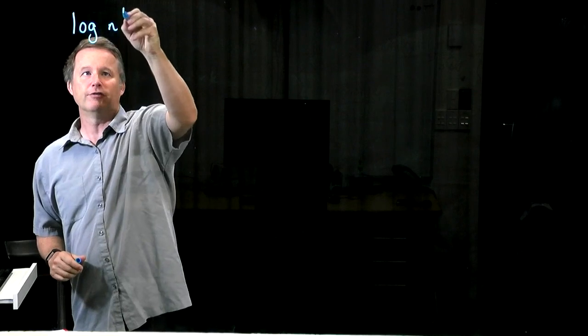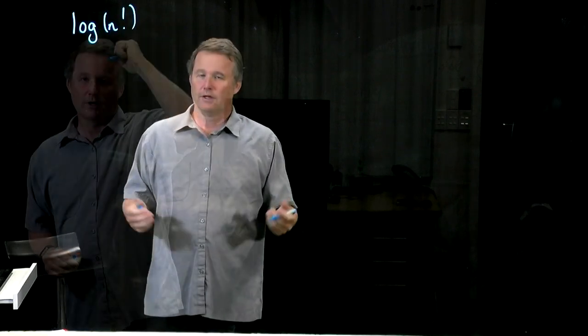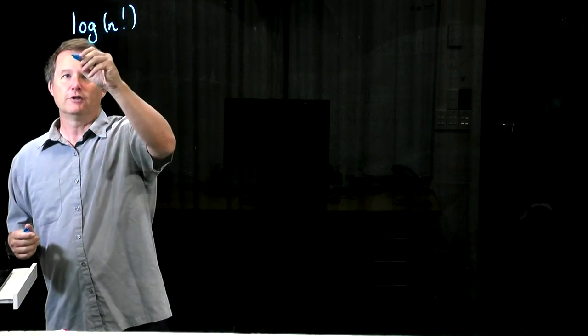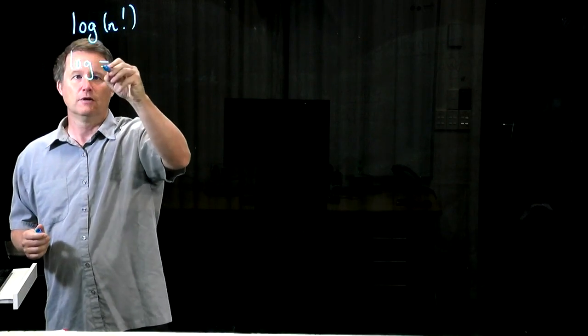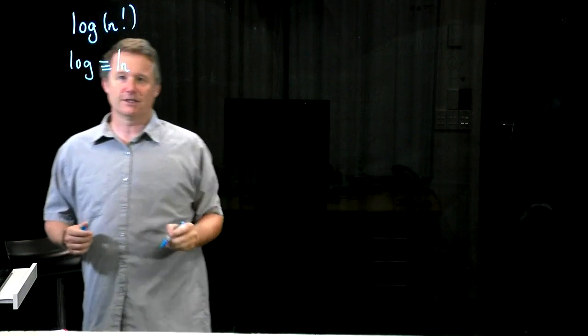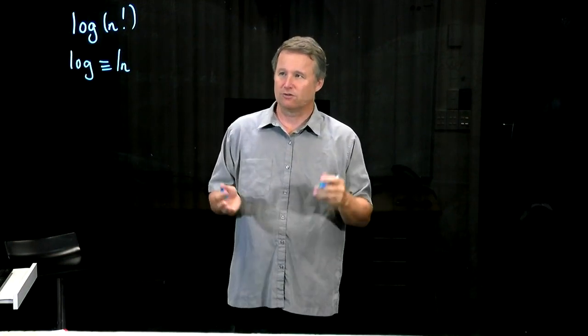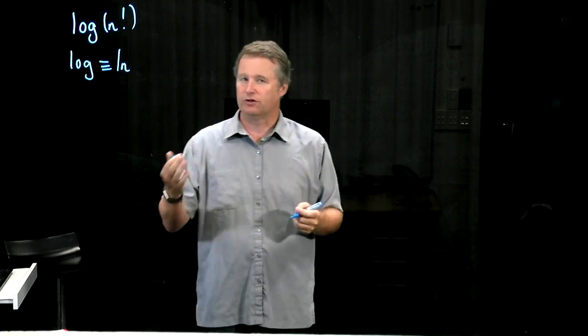So let's have a look at the asymptotic growth of log of n factorial. Now it doesn't matter which log we use, but we may as well use log to the base e because it makes the calculus simpler. It's only going to be a constant factor different if we used a different base.